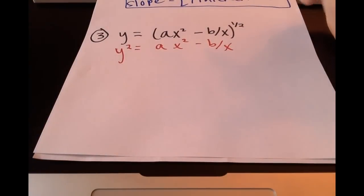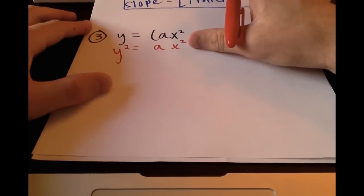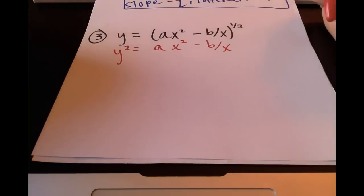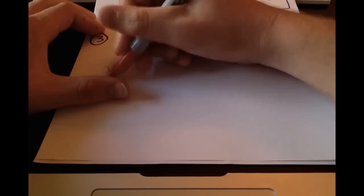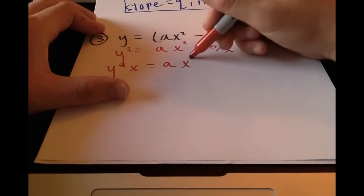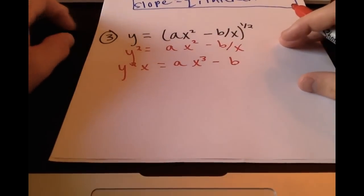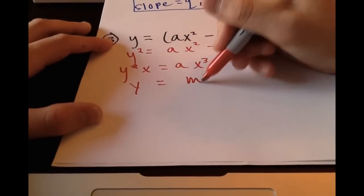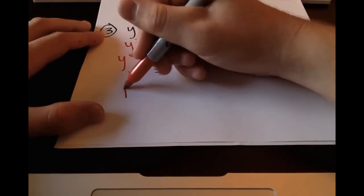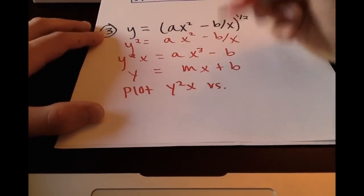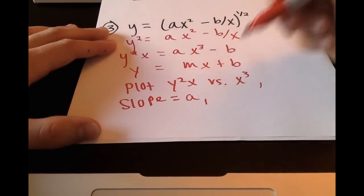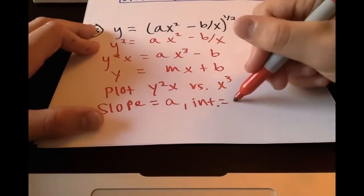Another important thing: to find your slope and intercept, you're going to want to isolate those values. Right now, this part looks good - ax² - but we have -b/x, and we don't want that x in the denominator. What you're going to want to do is multiply the whole equation by x. So you'll have y²x = ax³ - b. That looks a little better. It may look strange and take some getting used to, but we now have our equation in y = mx + b form. Correlating these, we would plot y²x versus x³. Our slope would be a and our intercept would be -b.